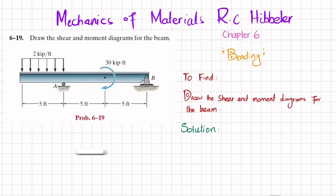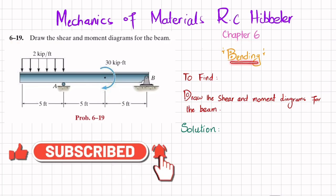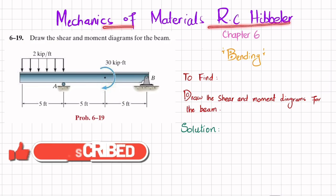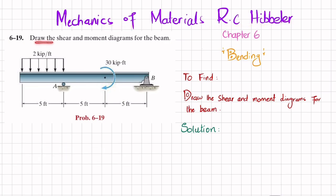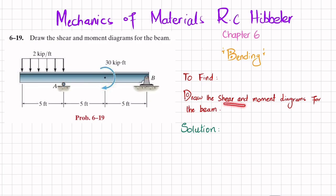Hello friends, welcome back. Problem 6-19, taken from Chapter 6 on bending in Mechanics of Materials by RC Hibbeler. The statement is to draw the shear and moment diagram for the beam. This is an overhanging beam with a uniformly distributed load of 2 kips per feet, an external moment of 30 kip-feet at one point, a roller support at point A, and a pin support at point B.